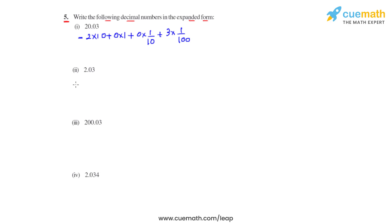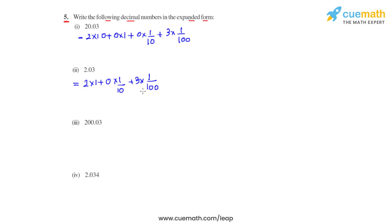Coming to the second part, we have 2.03. 2 is at ones place so we write it as 2 times 1, plus 0 times 1 over 10 because 0 is at tenths place after the decimal, plus 3 times 1 over 100 because 3 is at hundredths place after the decimal. This is the expanded form of 2.03.